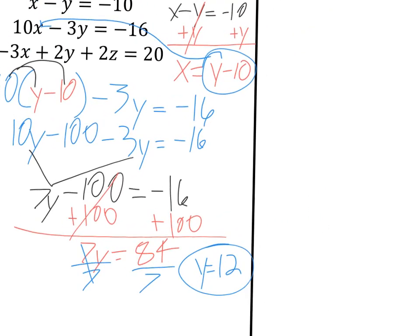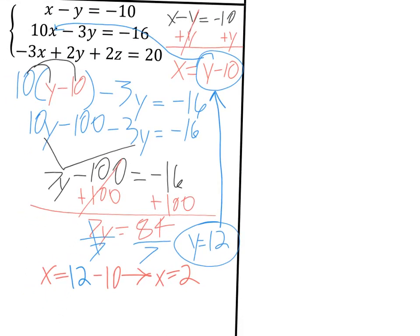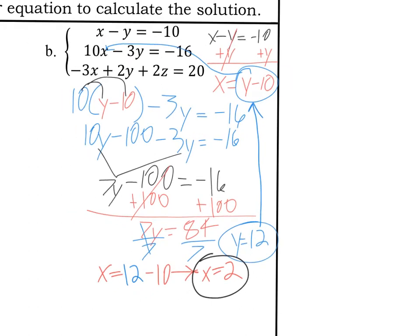So if y equals 12 and x equals y minus 10, then I can say x equals 12 minus 10, which is just 2. So x equals 2. So now I have my x and y answers. I can plug them in. There's x. Plug in y. I don't know how to draw this line. There. All right.